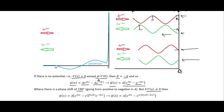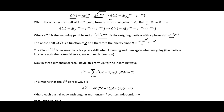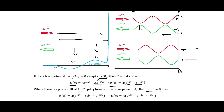Note that there is a factor of 2 in the phase shift expression because the incident wave comes in and interacts with the potential, and when it's reflected it interacts with the potential again on the way out — so the particle interacts with the potential twice. The phase shift delta is a function of k, which is therefore a function of energy since k equals sqrt(2mE) / hbar.